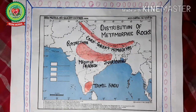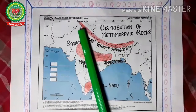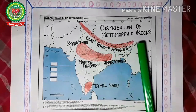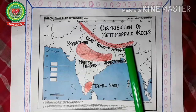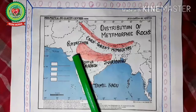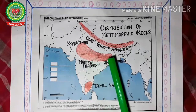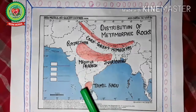Now we will discuss the distribution of metamorphic rocks in India. Metamorphic rocks are found in the core of the great Himalayas, from Jammu Kashmir to Arunachal Pradesh, where due to great pressure the metamorphic rocks are formed. Metamorphic rocks are also found in parts of Rajasthan, Madhya Pradesh and Jharkhand. In South India, metamorphic rocks are mainly found in Tamil Nadu.